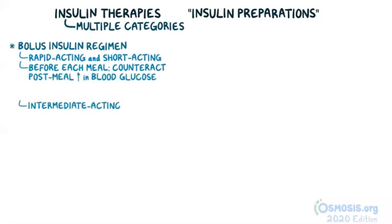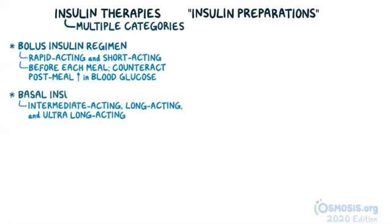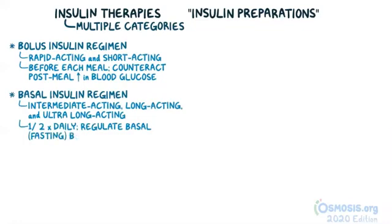Intermediate-acting, long-acting, and ultra-long-lasting insulins are used for basal insulin regimen to maintain a steady background level of insulin throughout the day. They are given once or twice daily to regulate the basal or fasting blood glucose level.